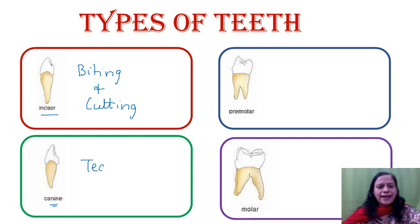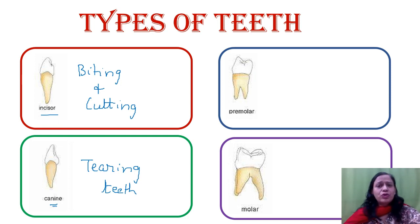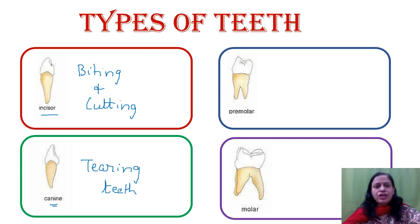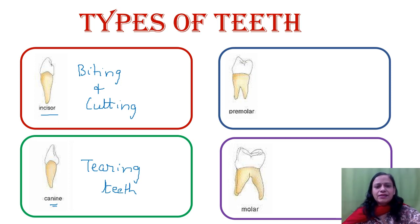Following the incisors, we have the canines. They are known as the tearing teeth — they help in tearing food, like when you're eating a chapati and need to break it off. People who eat non-veg make more use of their canines. Similarly, carnivorous animals have huge canines — if you've ever seen the teeth of a tiger or a lion on television, even dogs have big canines because they need to tear the flesh they're eating.